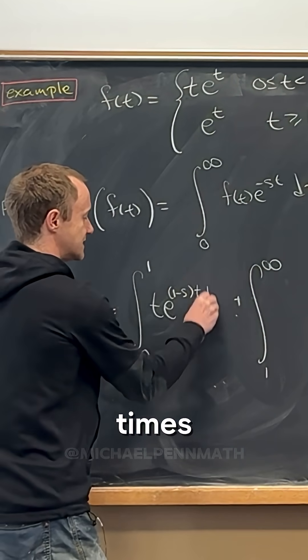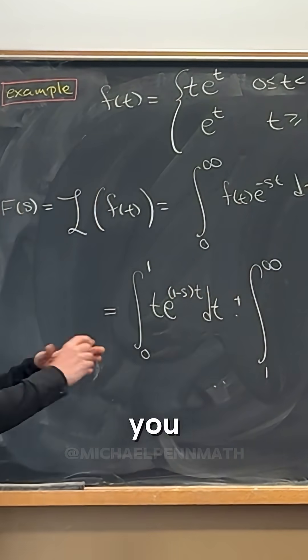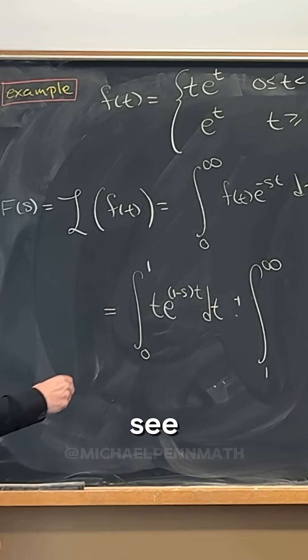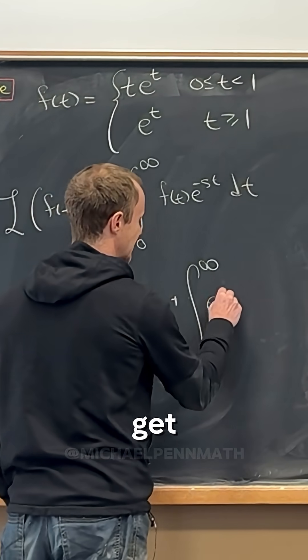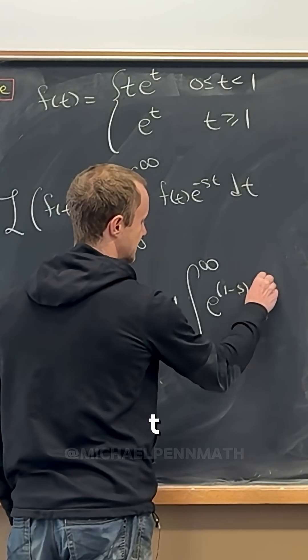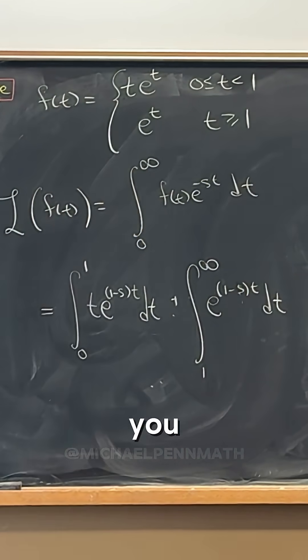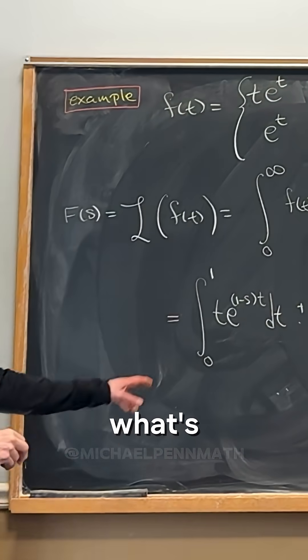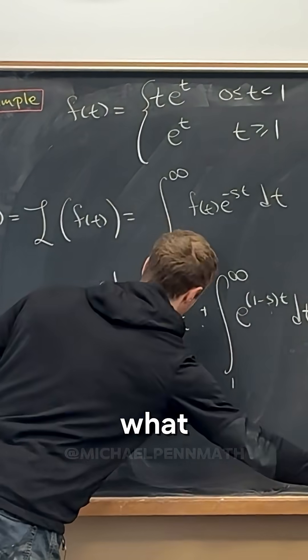That's what you get when you smush those together. For this other one you simply get e^((1-s)t) dt. Okay, so now what's our favorite way, or how would we evaluate this first integral?